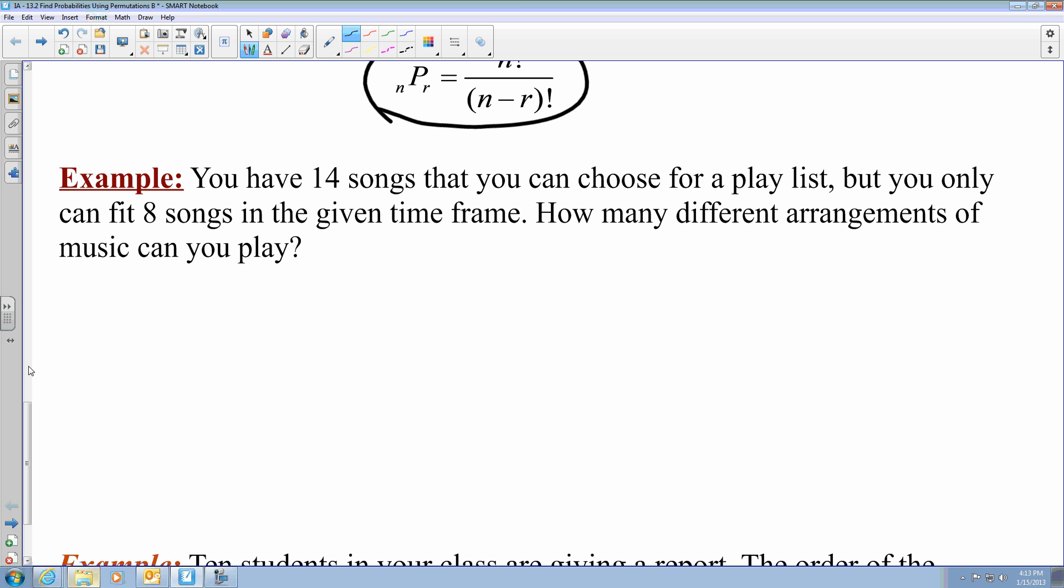So this means is that we have a permutation where n here equals 14 and our r equals eight. So this equals using the formula that are given up top. So this would be 14 factorial divided by n minus r. That's 14 minus eight, so that gives us six factorial.